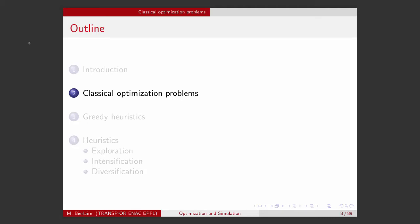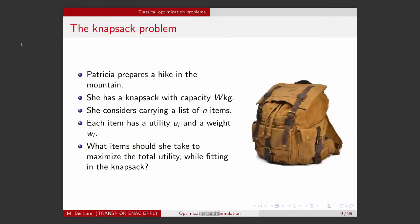Let's consider some classical combinatorial optimization problems to have a more concrete idea of what they are. One famous problem is called the knapsack problem. The knapsack problem can be described in the following way. Let's assume that Patricia is preparing a hike in the mountain, and she's carrying a knapsack with a given capacity, let's say W kilos — this is the maximum that the knapsack can actually hold. She considers carrying a list of many items, but there are too many to fit in the sack.